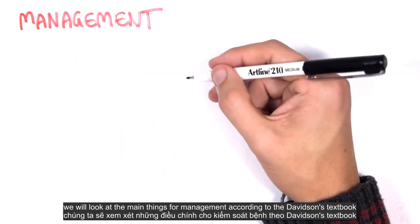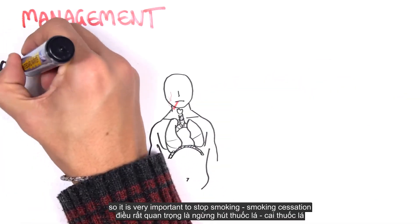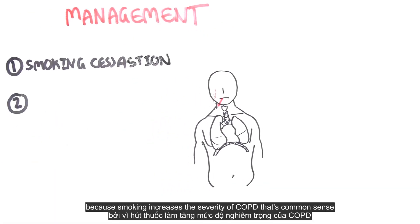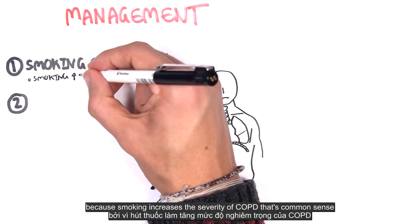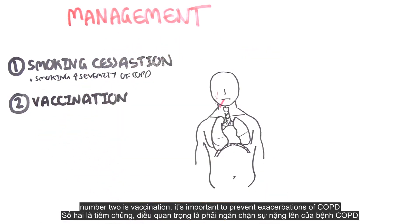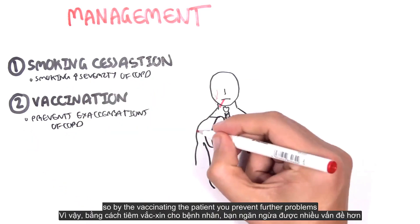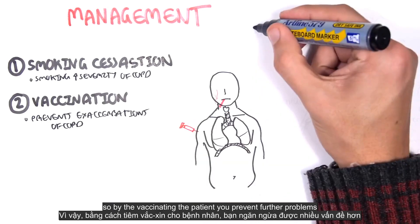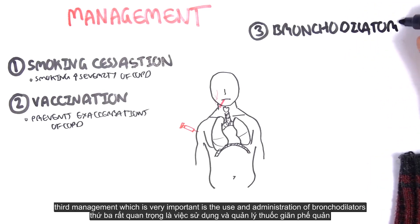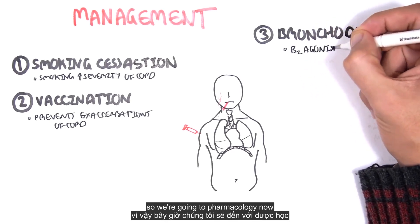Now let us move into management. It is very important to stop smoking — smoking cessation — because smoking increases the severity of COPD. Number two is vaccination, which is important to prevent exacerbations because lung infections make things a lot worse. Third, and very important, is the use and administration of bronchodilators.